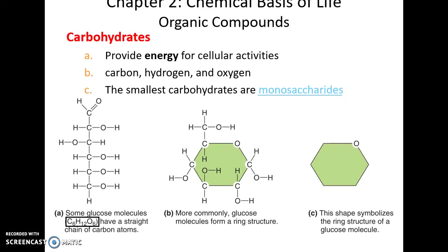Carbon, hydrogen, and oxygen are present in carbohydrates. The smallest of the carbohydrates are the monosaccharides — one sugar, often called simple sugars. You can see them shown as a line with six carbons in a row for glucose, or as a six-atom ring.